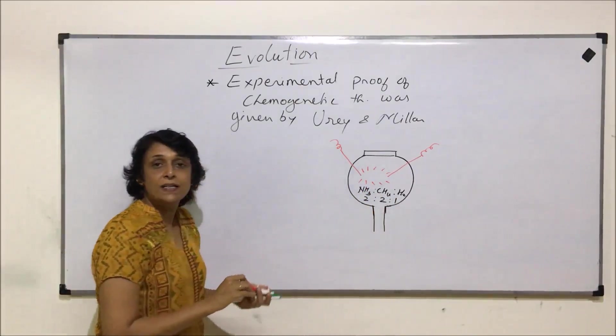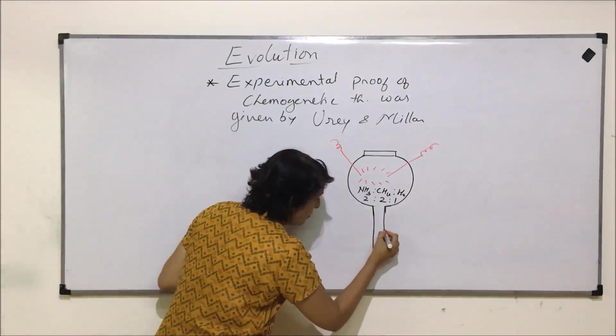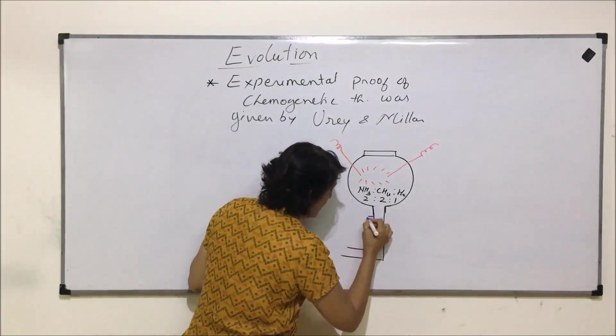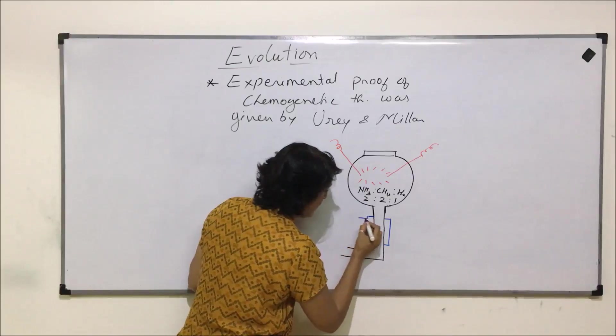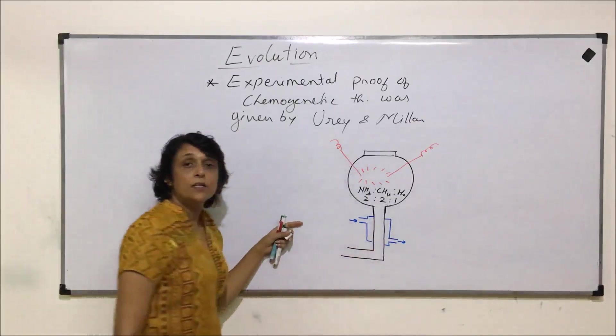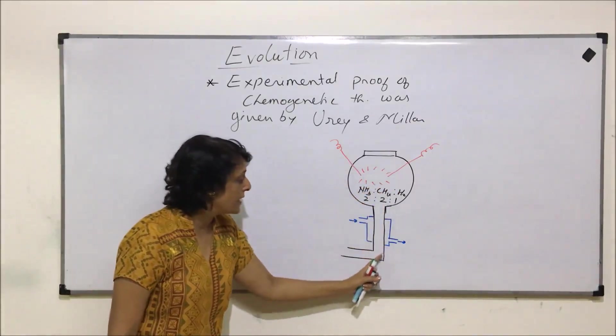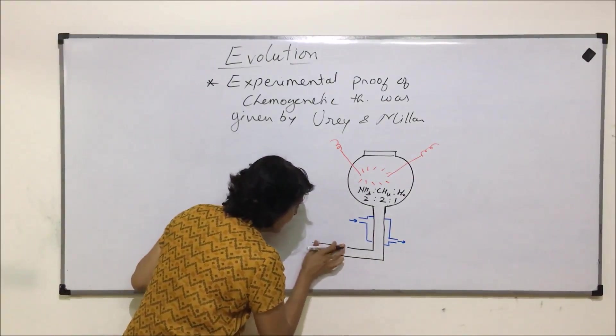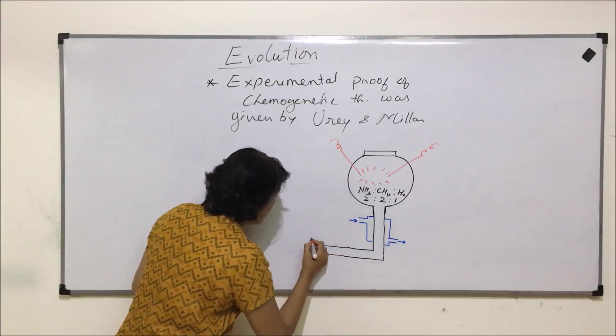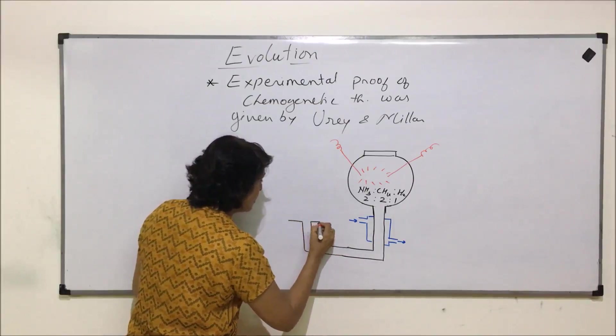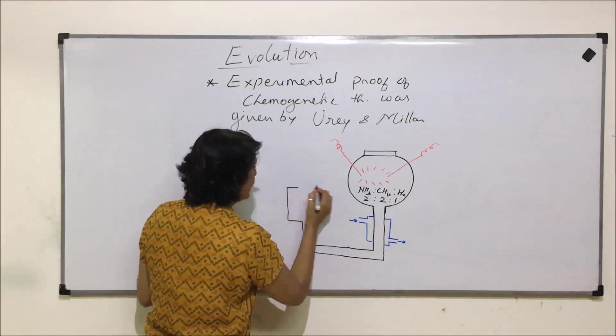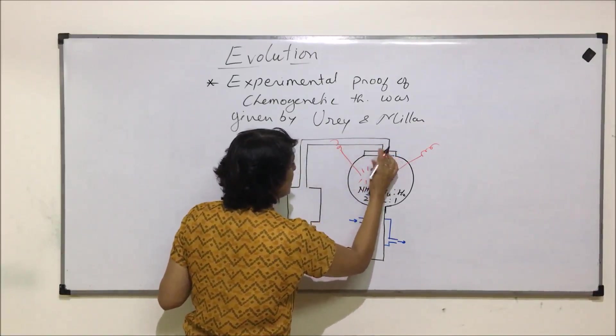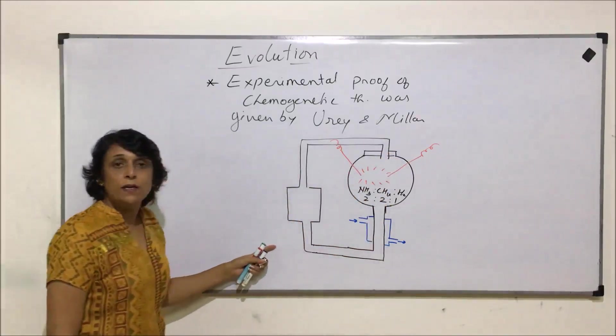Now let us see the complete assembly. This round bottom flask was connected to a long tube, and this long tube had a condenser in which cold water was circulated. Whatever was happening here would get condensed here and they collected it. This condensed liquid was collected for analysis, then it was passed into another compartment where it was again heated and sent back to the same round bottom flask.